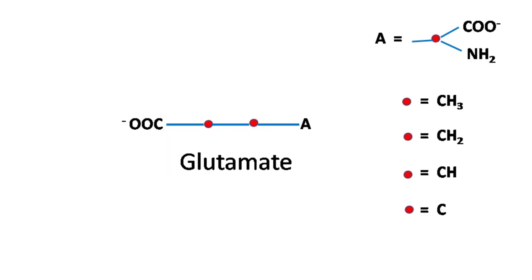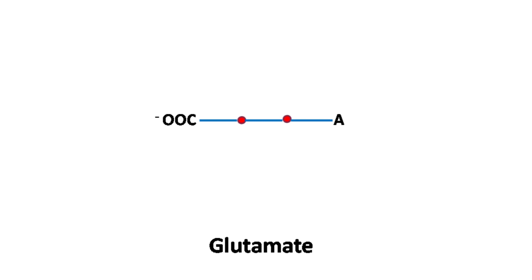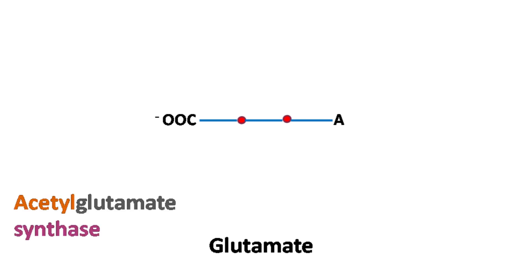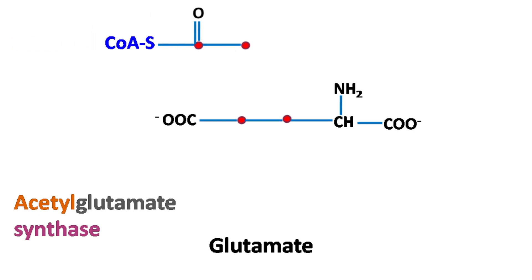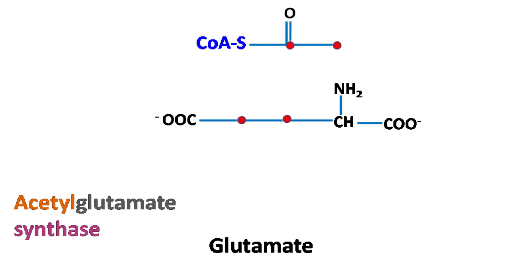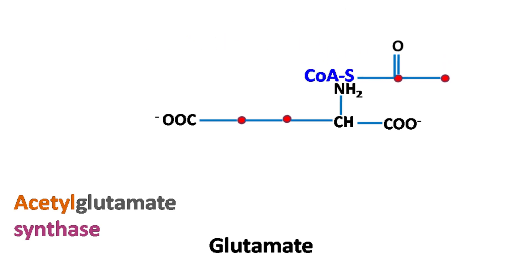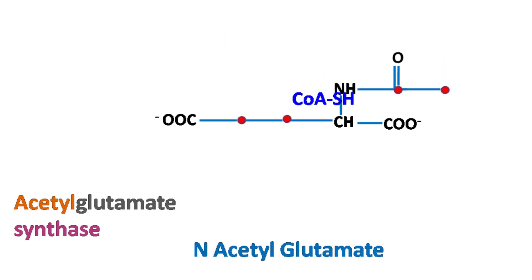In the first step, acetyl-CoA reacts with glutamate to form N-acetylglutamate. The enzyme involved in this reaction is acetylglutamate synthase.